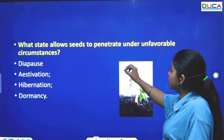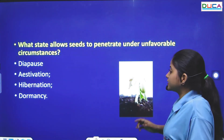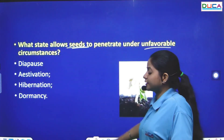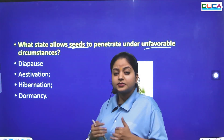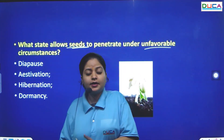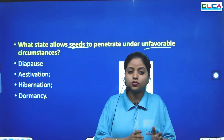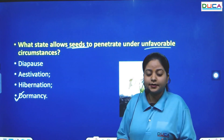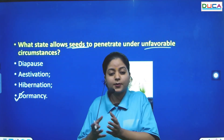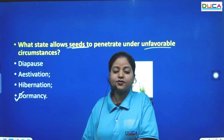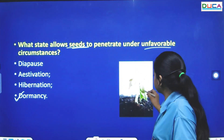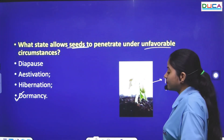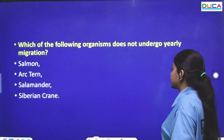The next question: Which state allows seeds to persist under unfavorable conditions? Seeds go into dormancy under unfavorable conditions — they will not germinate or produce a new plant until conditions improve.